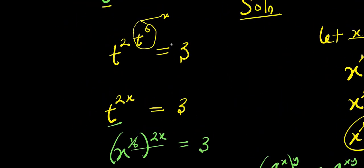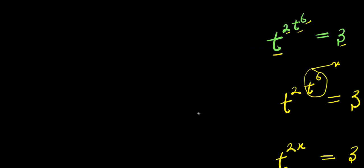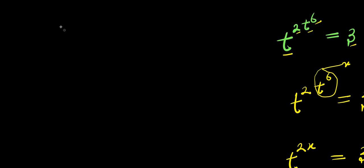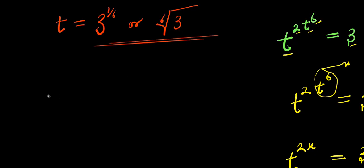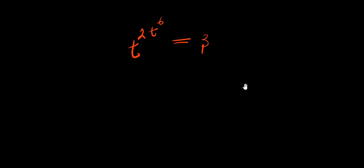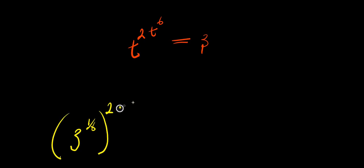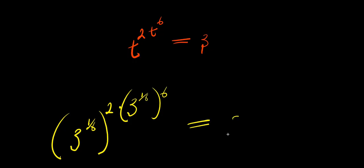Now that we have gotten our value for t, what we can do is check. Remember our t equals three to the power of one over six, or the sixth root of three. Let's recall we have t to the power of two times t to the power of t to the sixth, and our t is three to the power of one over six. Let's check if this will satisfy the equation — t is three to the power of one over six — and everything here should equal three.